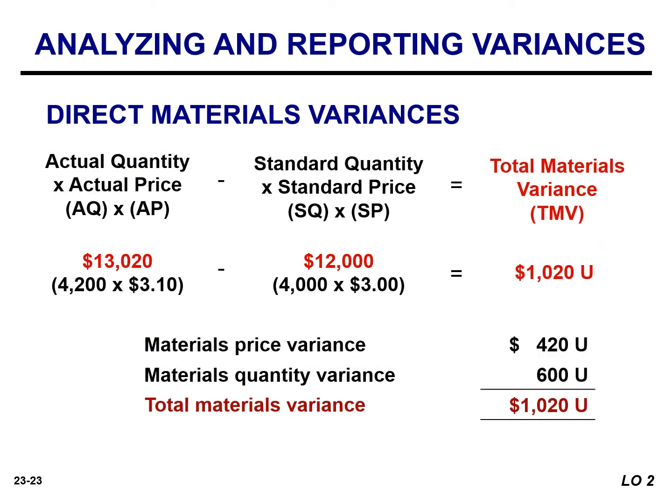The total materials variance of $1,020 is the sum of the material price variance and the material quantity variance. These variances help managers determine if they have met their price and quantity objectives regarding materials.